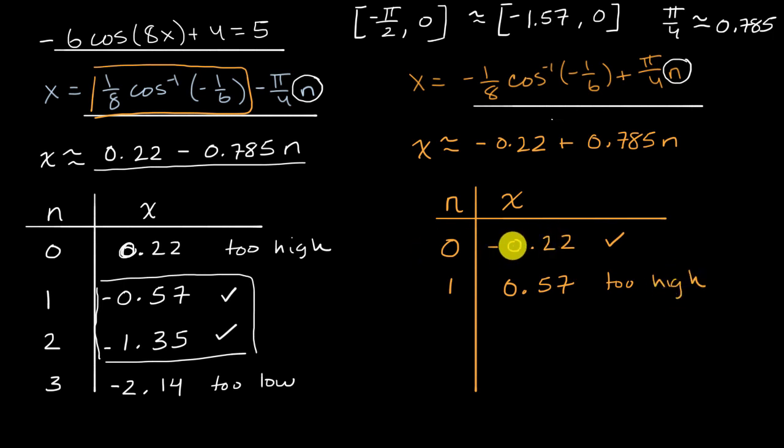So now we could try going lower than negative 0.22 by having negative values of n. So if n is equal to negative one, that means we're subtracting 0.785 from this right over here, which would get us to negative 1.01. Well, that one works out. So that's in our interval.